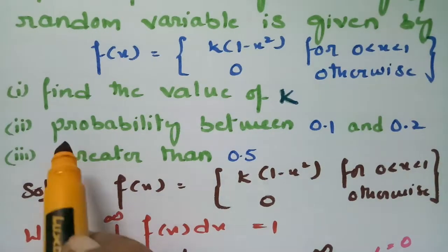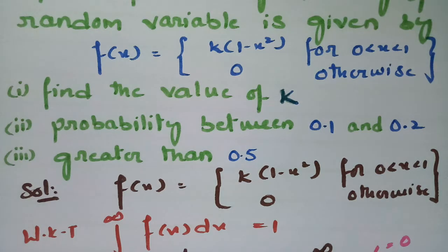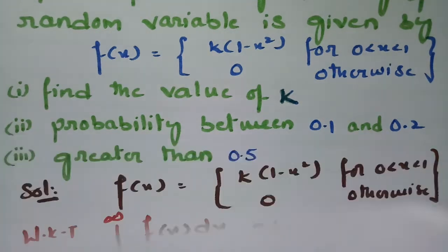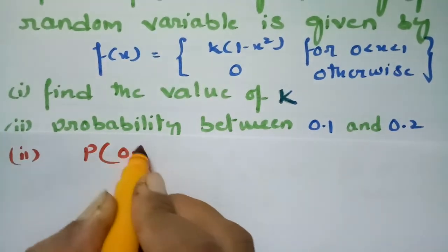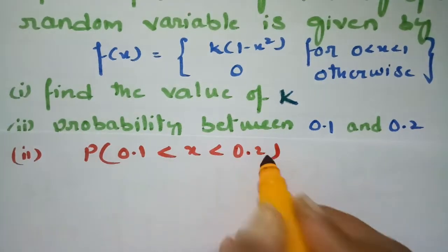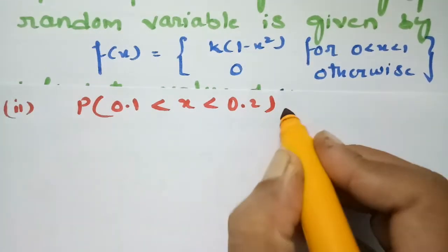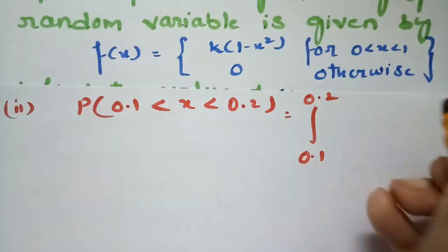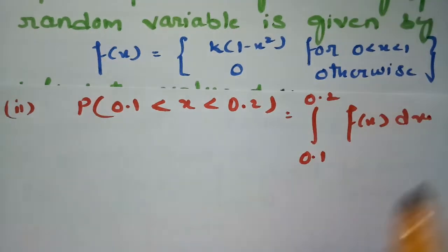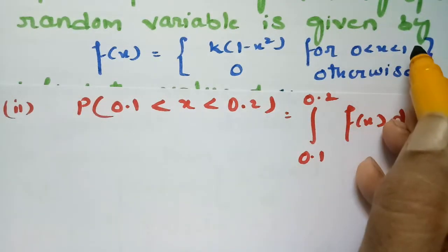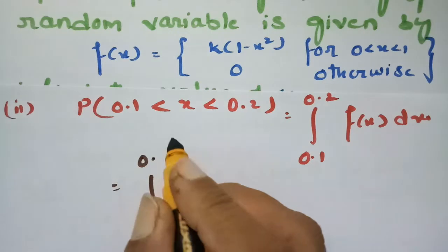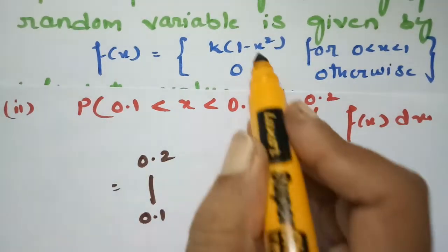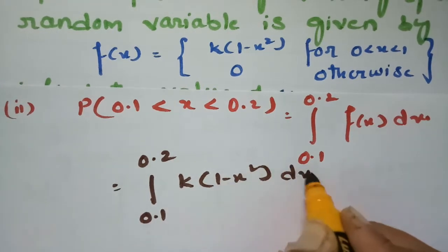The second question is to find the probability that x lies between 0.1 and 0.2, which equals the integral from 0.1 to 0.2 of f(x) dx. Since 0.1 and 0.2 lie within the interval (0, 1), the value of f(x) is k(1 - x²).